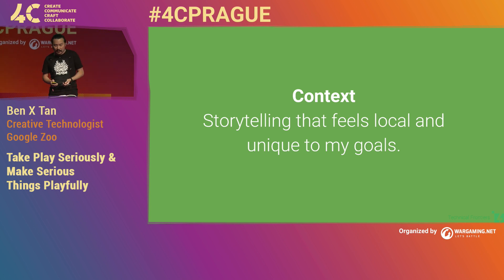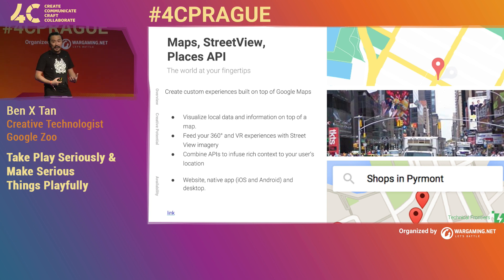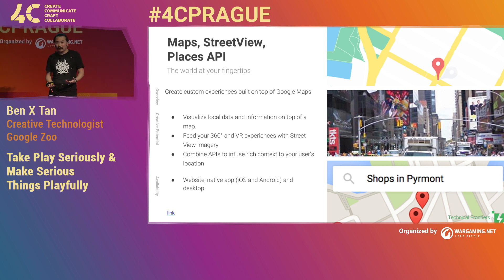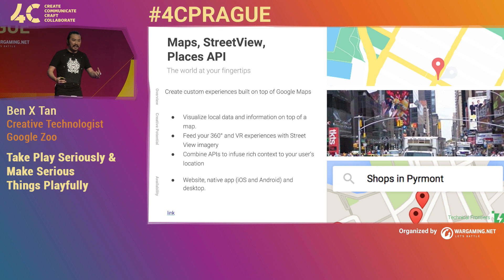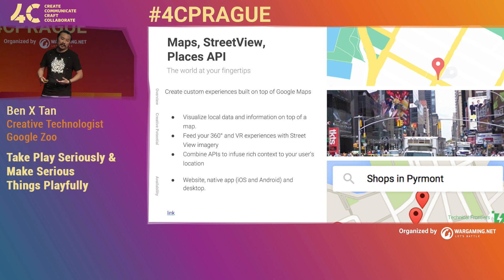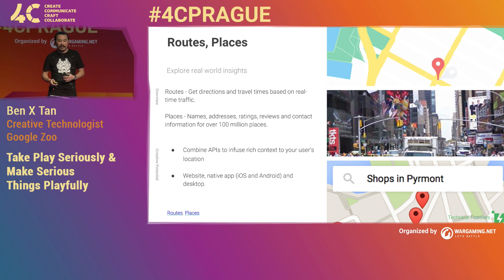The next section is context — about storytelling and things relevant to the user. Of course there are Maps, and all this data is available via an API. As a developer you have access to rich information about the real world to use in your games. Pokemon Go is the biggest example of a maps-based location game. There's also the Places API, which tells you where there are restaurants, bookstores, museums, and parks, including opening times. You can also get Routes — from point A to point B, which path can I take, how long will it take.